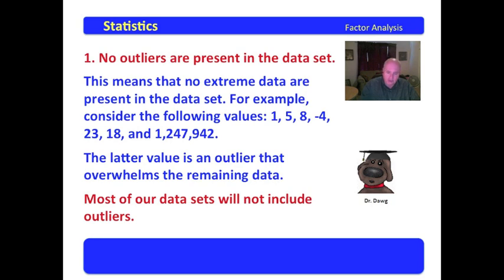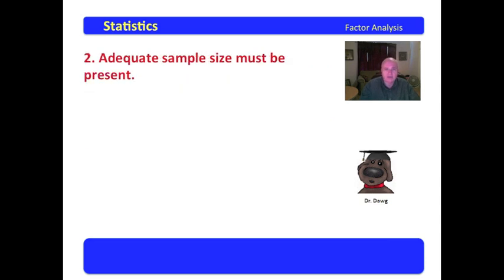Most of our data sets will not include outliers because we may be looking at percents, things like that. A percent would range from 0 to 100.